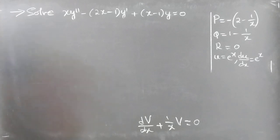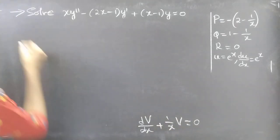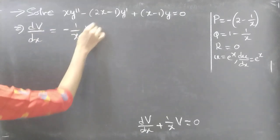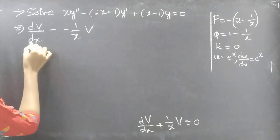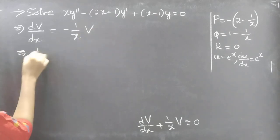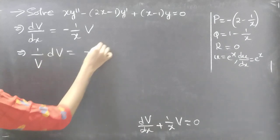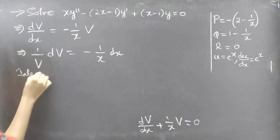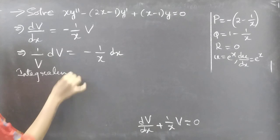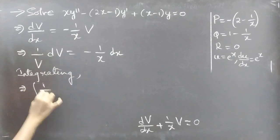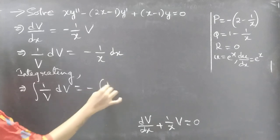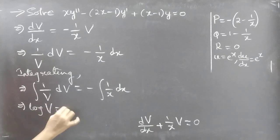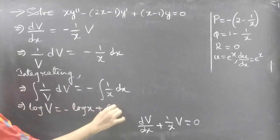Now we separate the variables. Taking the second term to the RHS: dV/dx = −(1/x)·V. Rearranging: (1/V)·dV = −(1/x)·dx. The variables are separable, so we integrate both sides: ∫(1/V)dV = −∫(1/x)dx.